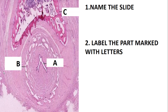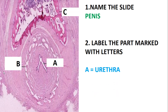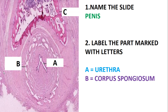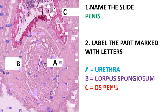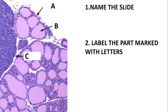This slide is the penis. Label the parts marked with letters. A is the urethra, B is the corpus spongiosum, and C is the os penis. Let's quickly move on and look at the next slide.